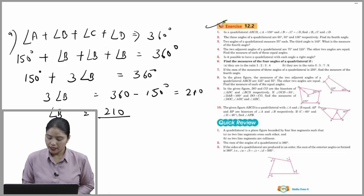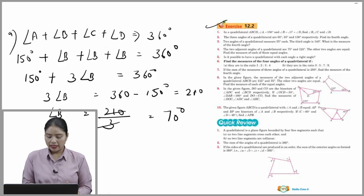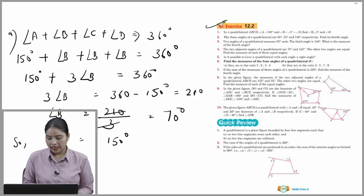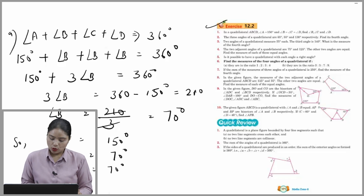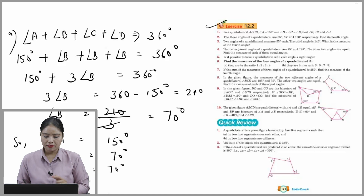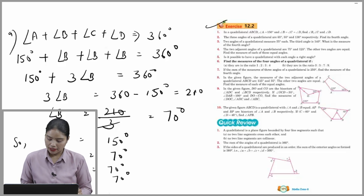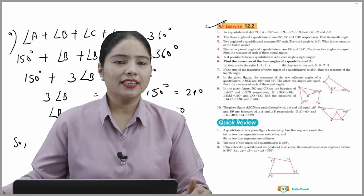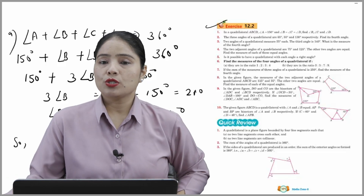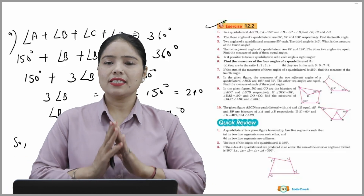Angle B = 210 ÷ 3 = 70°. So angle A = 150°, angle B = 70°, angle C = 70° (since C equals B), and angle D = 70° (since all three are equal). Hope you understood well. The remaining questions you have to complete on your own. With this we end the chapter — keep practicing and complete the rest of the exercises on your own.